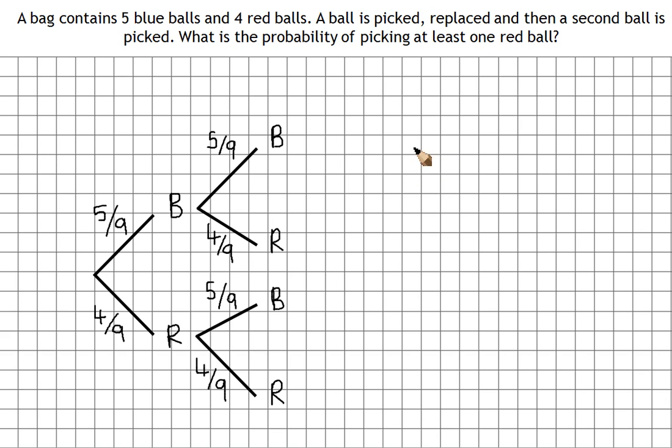Now if we want at least one red ball that leaves us with three options. We can pick blue then red, we can pick red then blue, or we can pick red and red, because at least one red ball means that you can pick one or two red balls. So we're interested in this branch, this branch, and this branch.